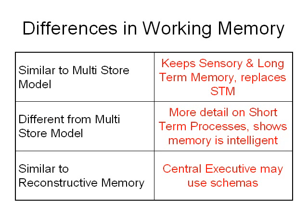So, differences in working memory: it's similar to the multi-store model because of the sensory register and long-term memory, but it's different because it has much more detail on short-term memory processes. The central executive shows that memory is intelligent. It has some similarities to reconstructive memory because the central executive may be the part of memory that uses schemas.